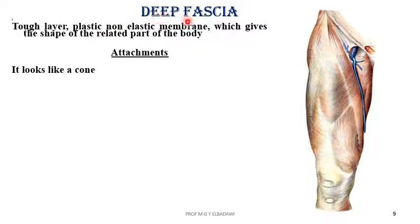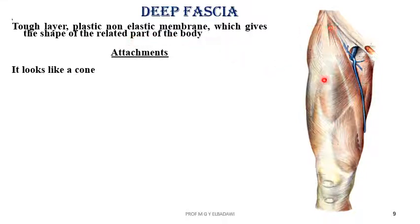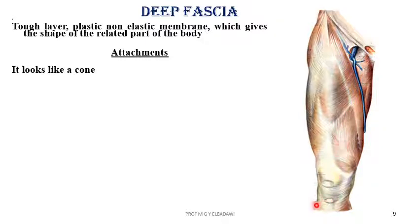The deep fascia in the whole body is described as being a tough, plastic, non-elastic, non-stretchable membrane. That membrane gives and keeps the shape of the related part of the body. Here in the thigh, it is tough as usual and is named the fascia lata. Its attachment looks like a cone, with a large circle above surrounding the edges of the thigh and a small circle below surrounding the leg.